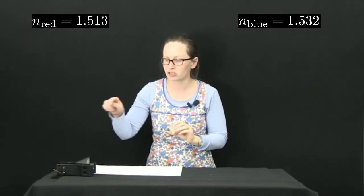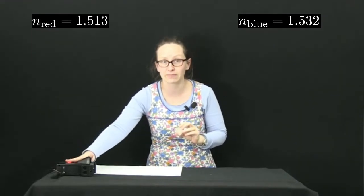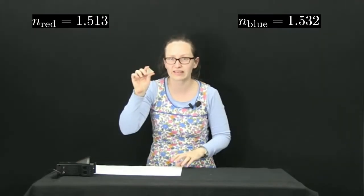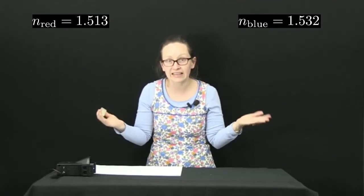So let's have a look now at what happens when we shine light from this light box through this prism, and then look at the light coming out of the prism on the other side. In order to see it clearly, we're going to have to turn out the lights.